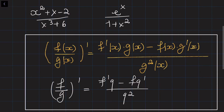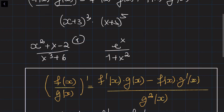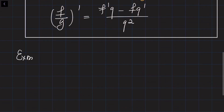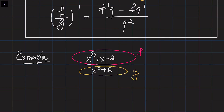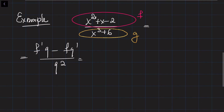Let's do a couple of examples. We are going to find the derivative of two functions. Starting with the first example, we are given the quotient of two polynomials: (x² + x − 2) divided by (x³ + 6). I'll denote the numerator function as f and the denominator function as g, and apply the formula f'g minus fg' divided by g squared.